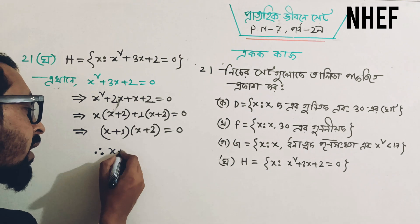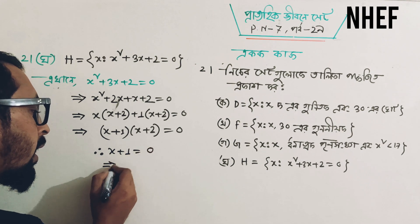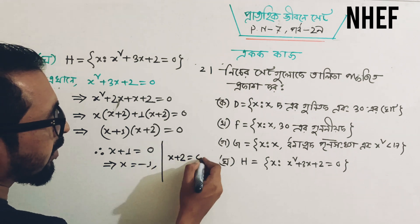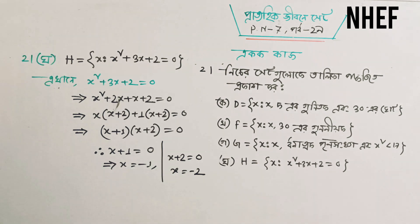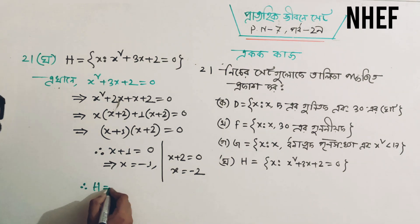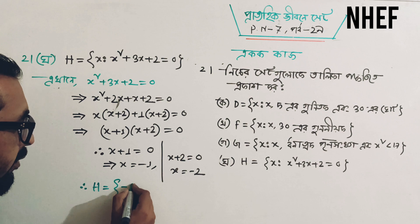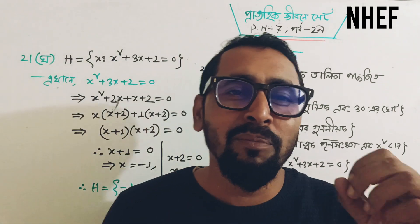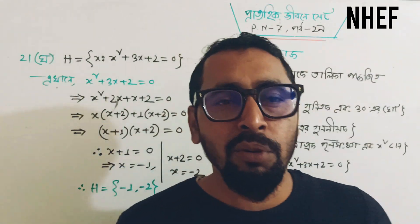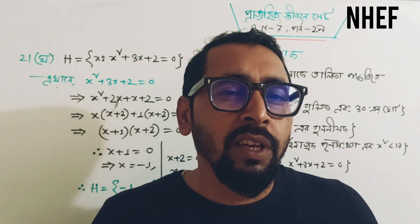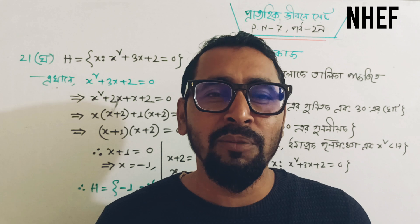So x plus 1 is equal to 0 and x is equal to minus 1. x plus 2 is equal to 0 and x is equal to minus 2. So the solution set is x = -1 and x = -2. Thank you.